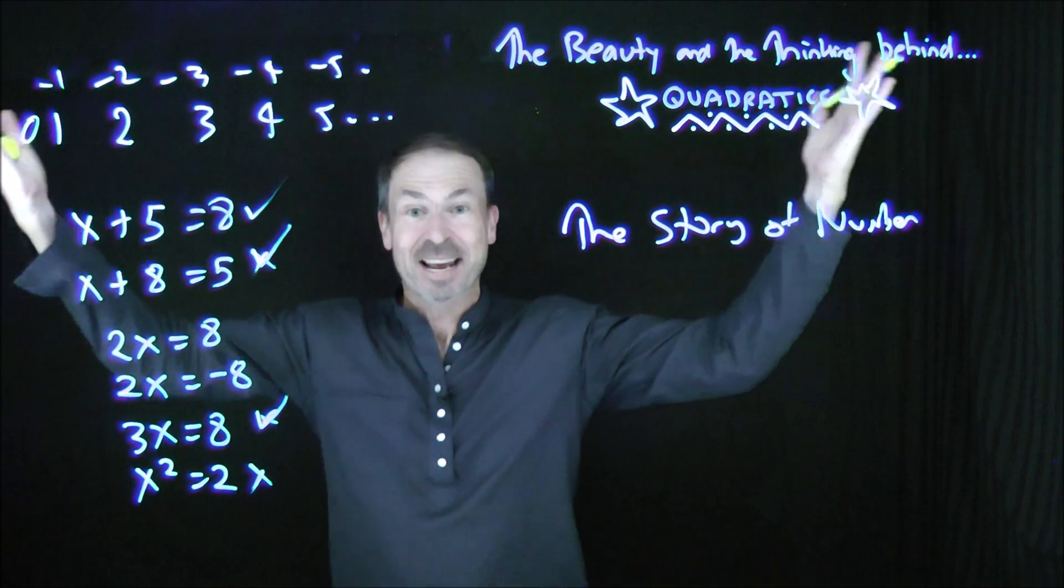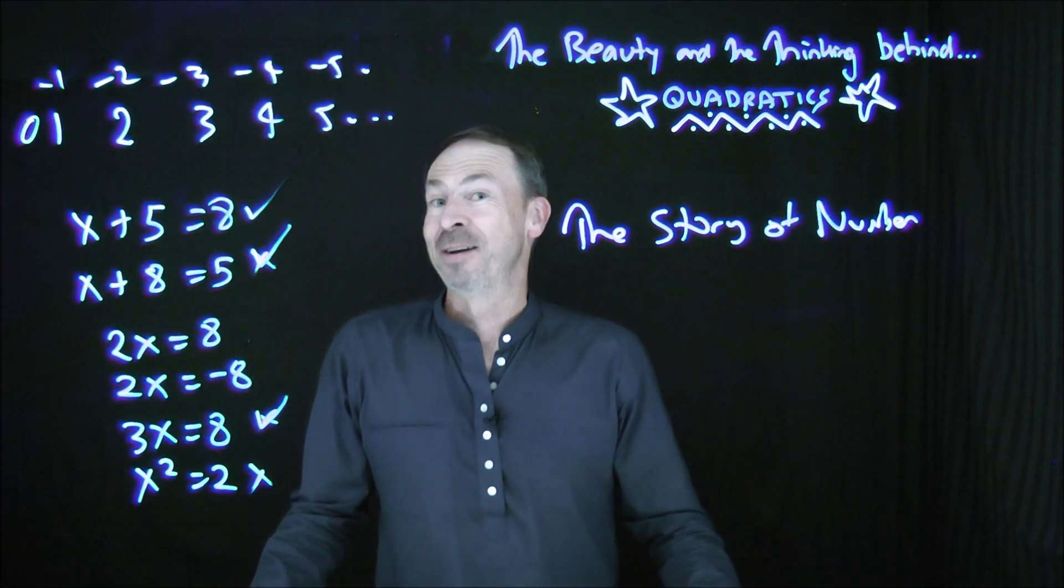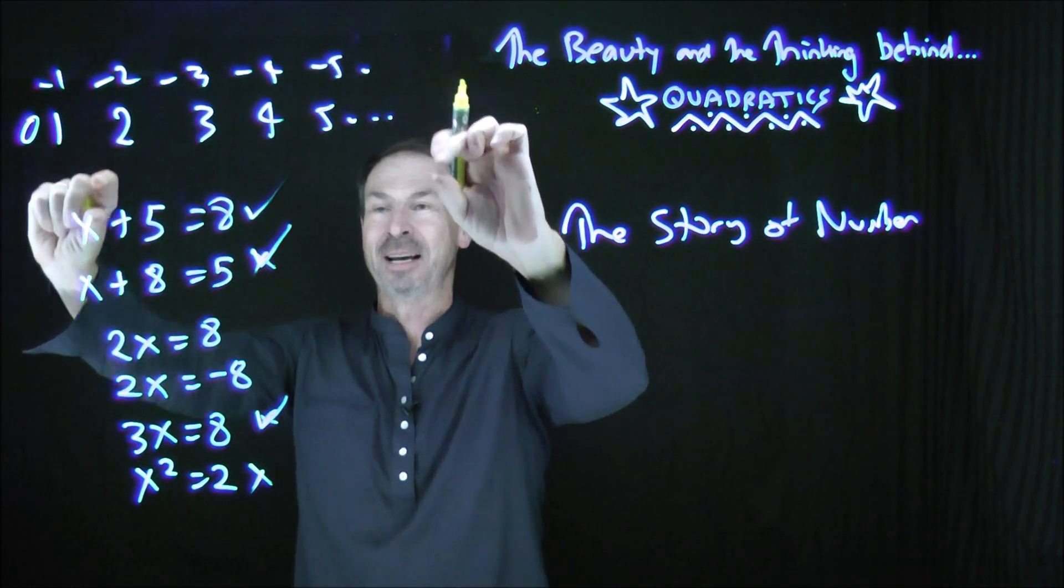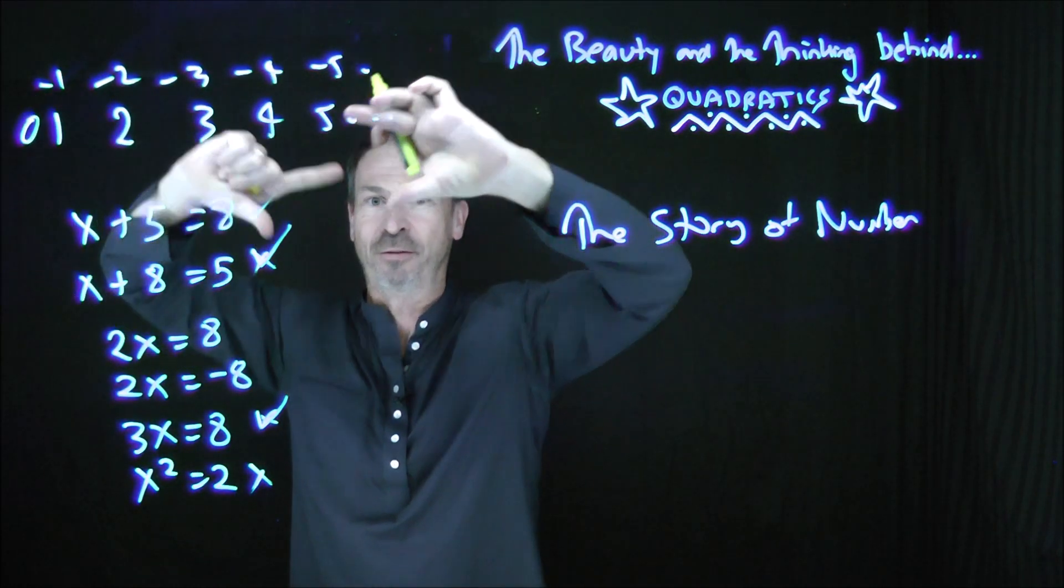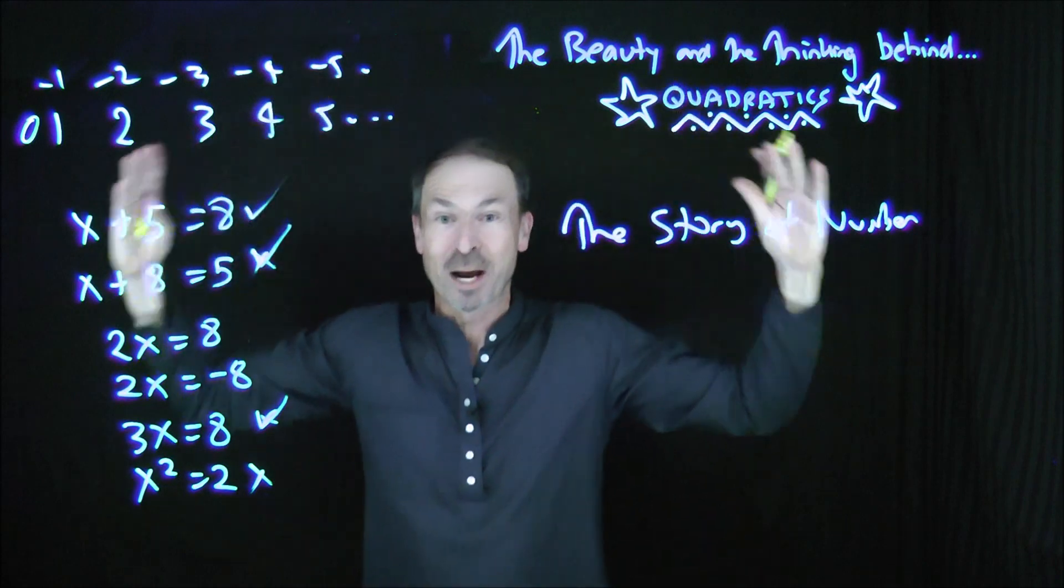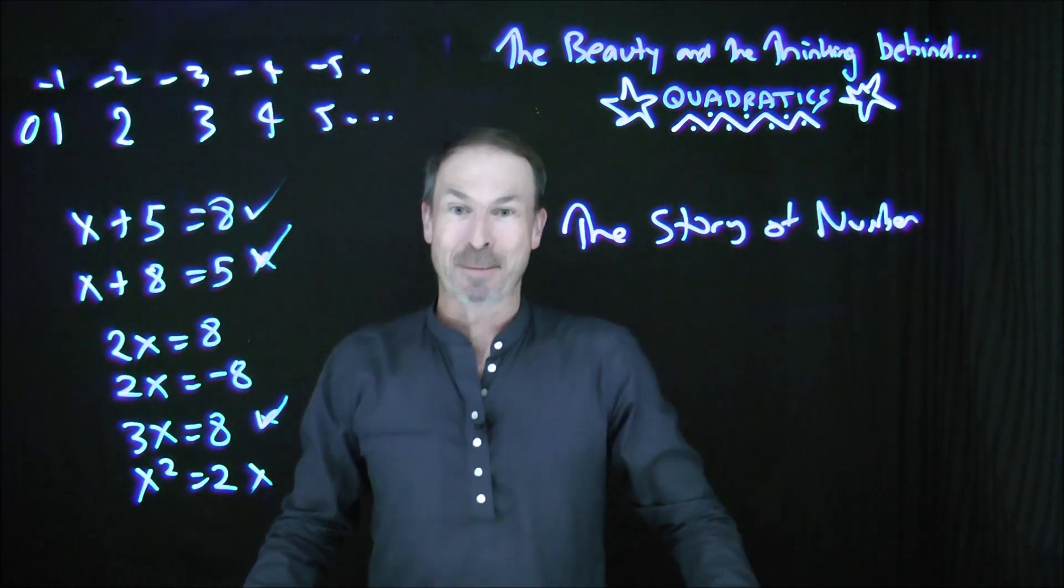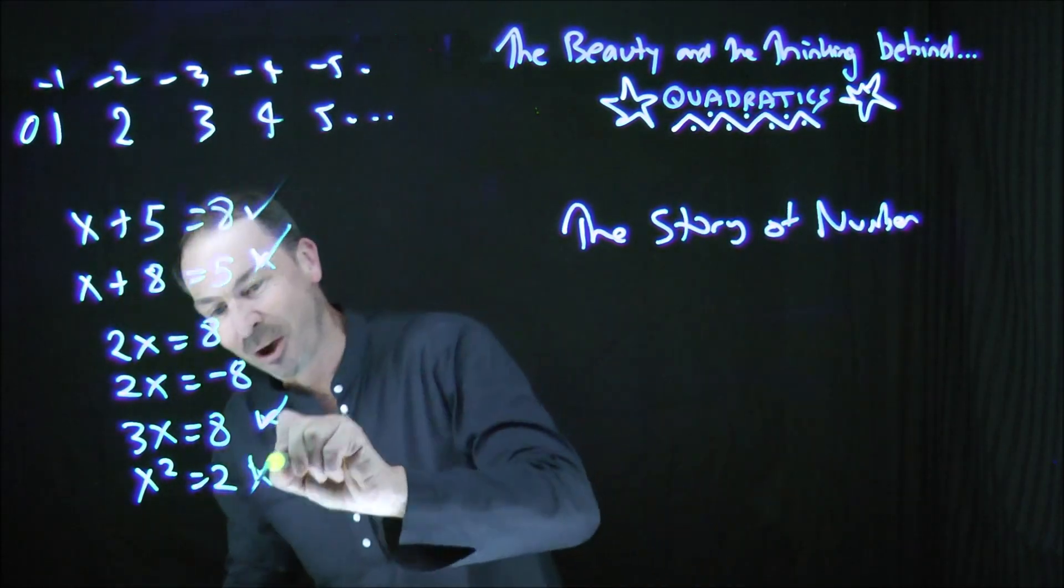So then, the next thing you do is you start inventing this notion of irrational numbers. You've got all the counting numbers, and then it became the set of all the integers, the positive and negative counting numbers. And then you add to that all the fractions. Now we add to that all the irrational numbers, and we've got the real number system. And we think, great, now we can solve those types of equations.